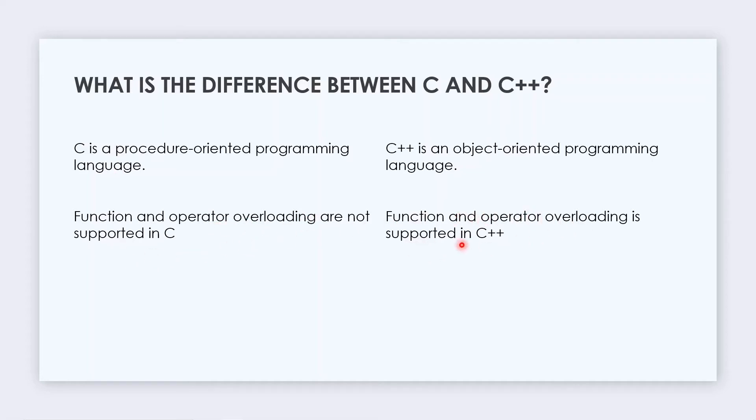A separate video on operator overloading is available on our channel. The third difference is namespace features are not present in C. Namespaces are used by C++ which avoid name collision. You might have seen C++ uses 'using namespace std' in its code, which is used by C++ to avoid name collision.